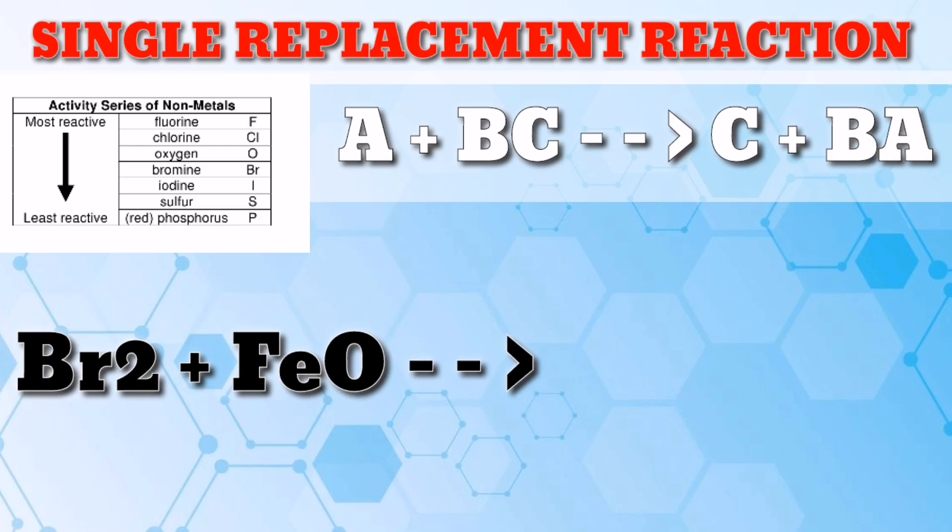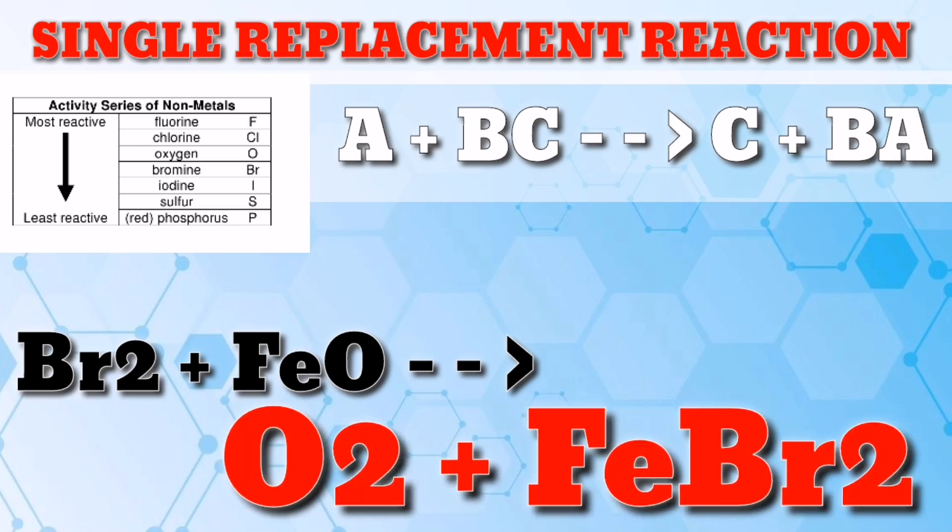We have bromine gas added with ferrous oxide. What are the products? Brilliant. The products are oxygen gas and ferrous bromide.